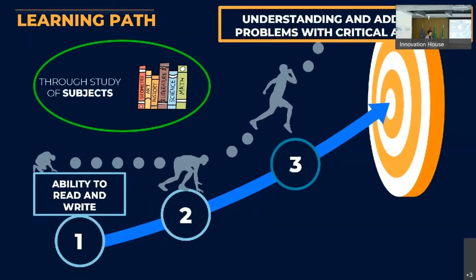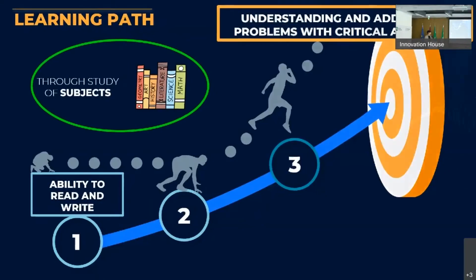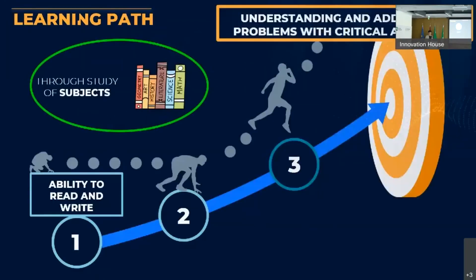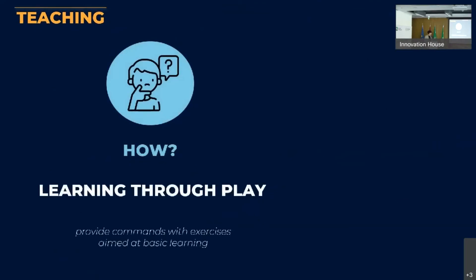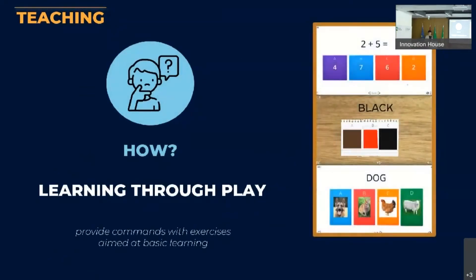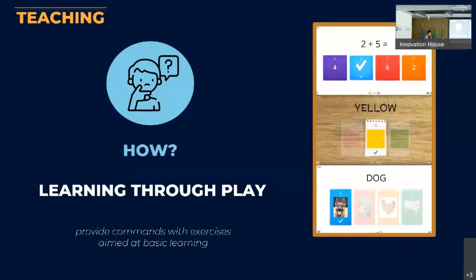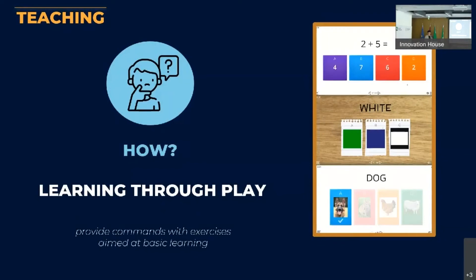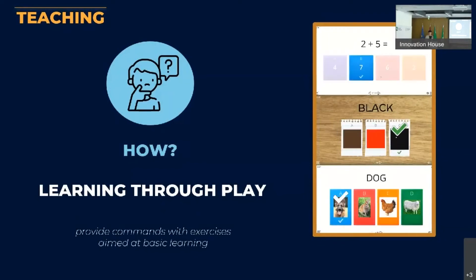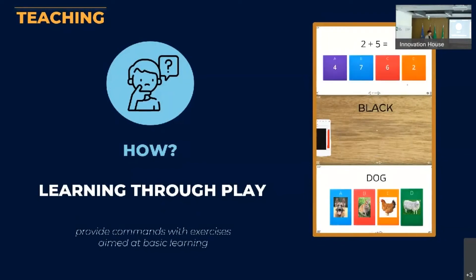Through the study of possible subjects, arriving at the final goal of understanding and addressing problems through a critical approach. This can be done through exercises — as shown in the example on the right side — with three different exercises of math, art, and English. This tool was also used during the COVID period by primary school teachers to give smart lectures.